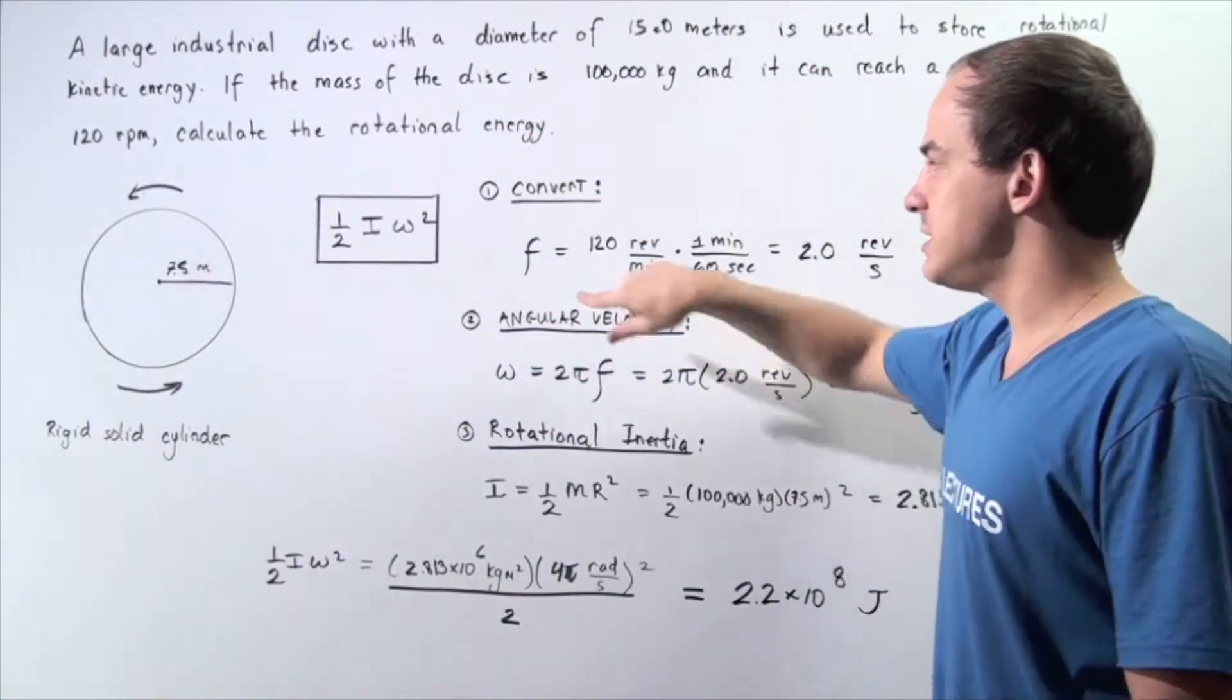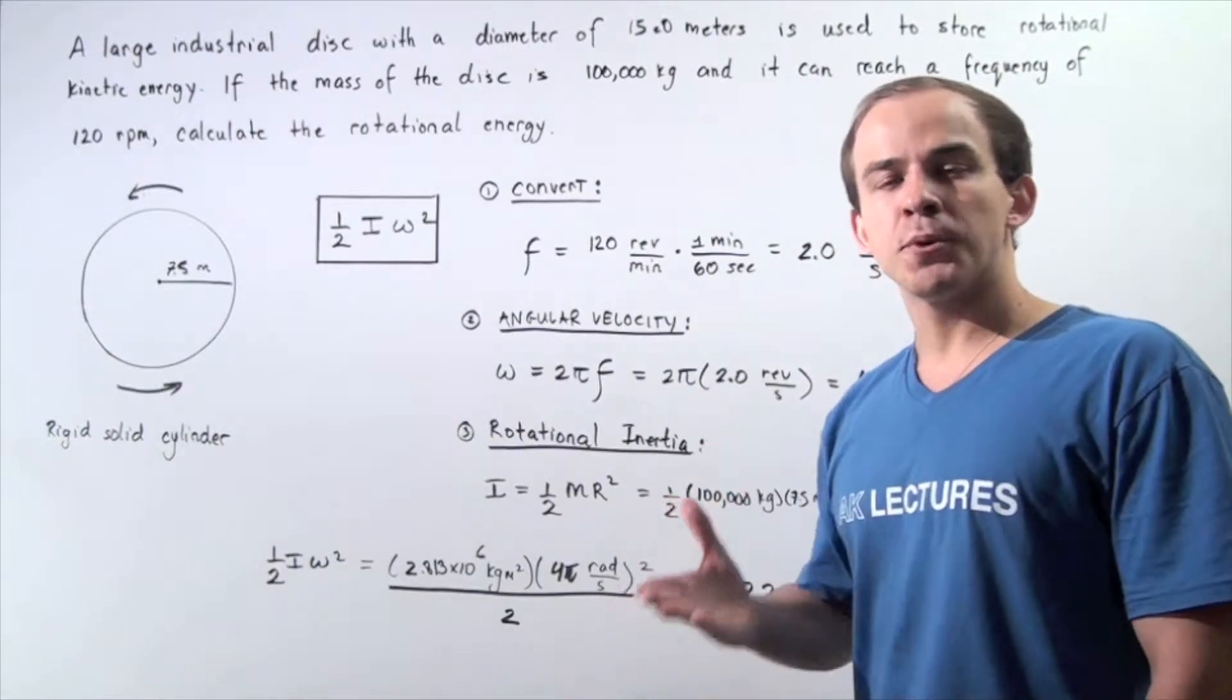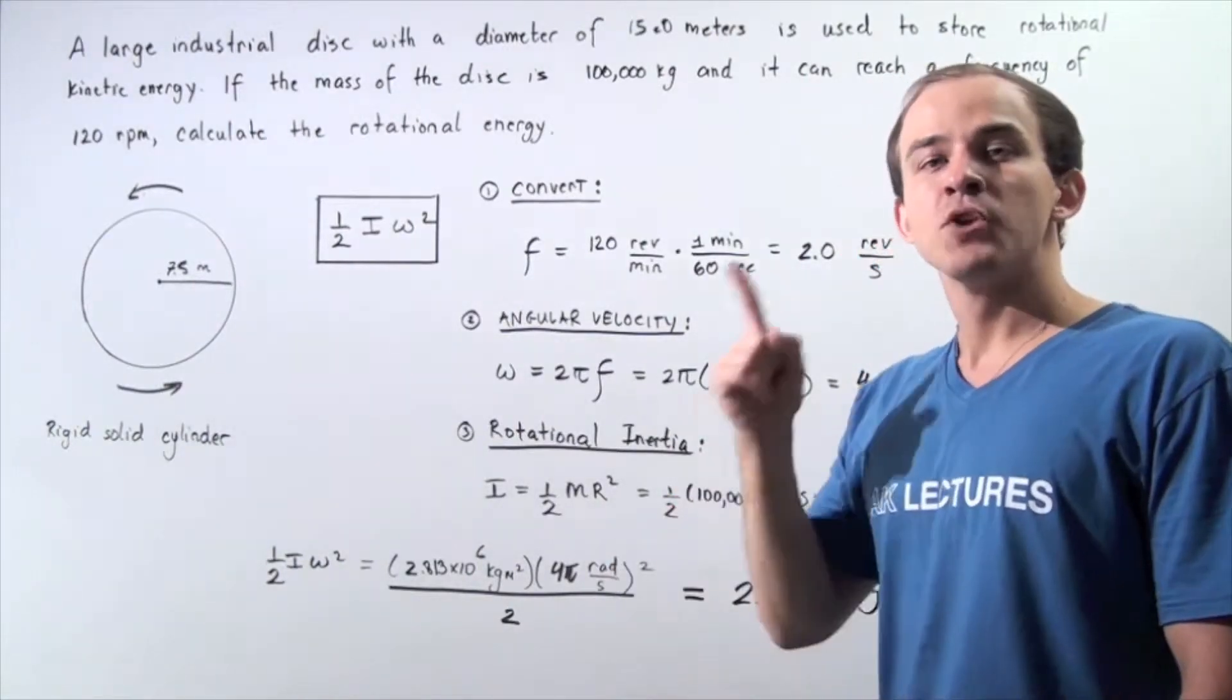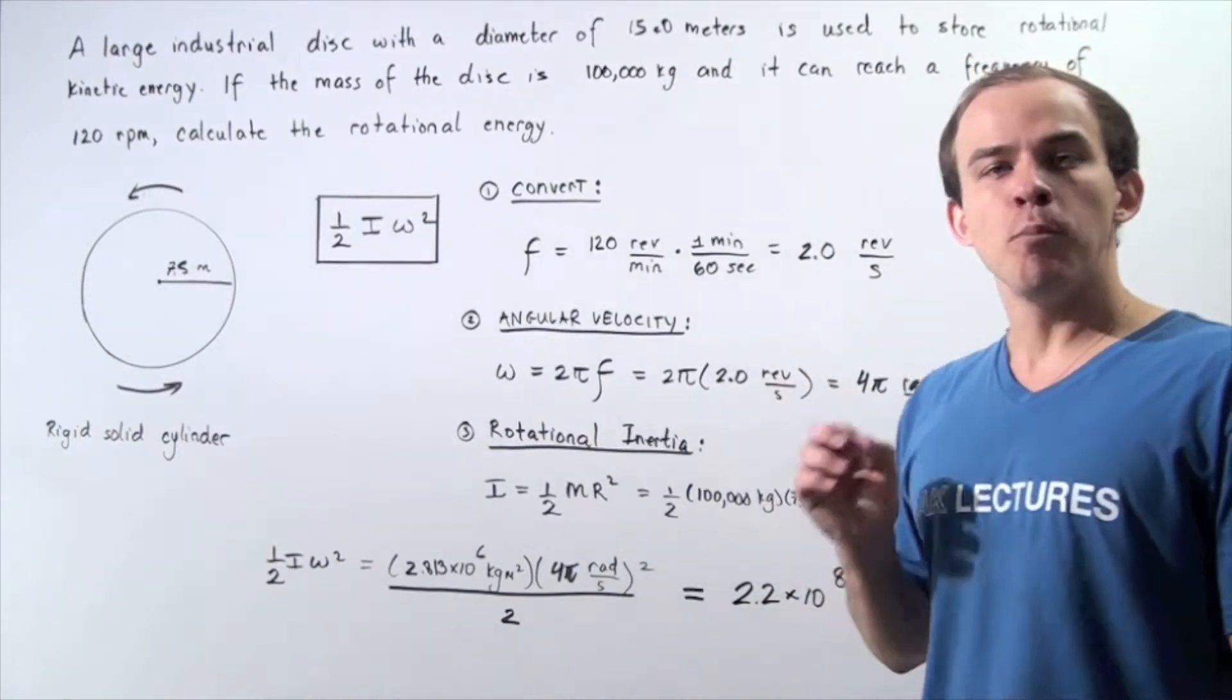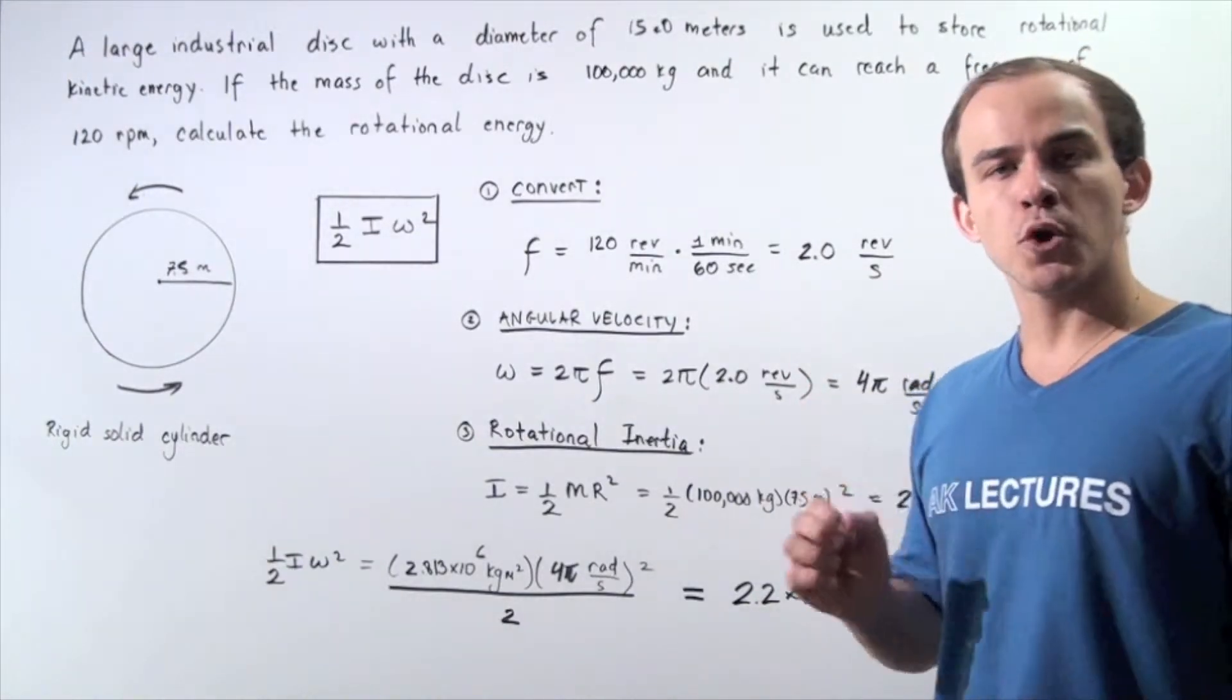The frequency is equal to 120 revolutions per minute multiplied by 1 minute divided by 60 seconds. And we get 2.0 revolutions per second.